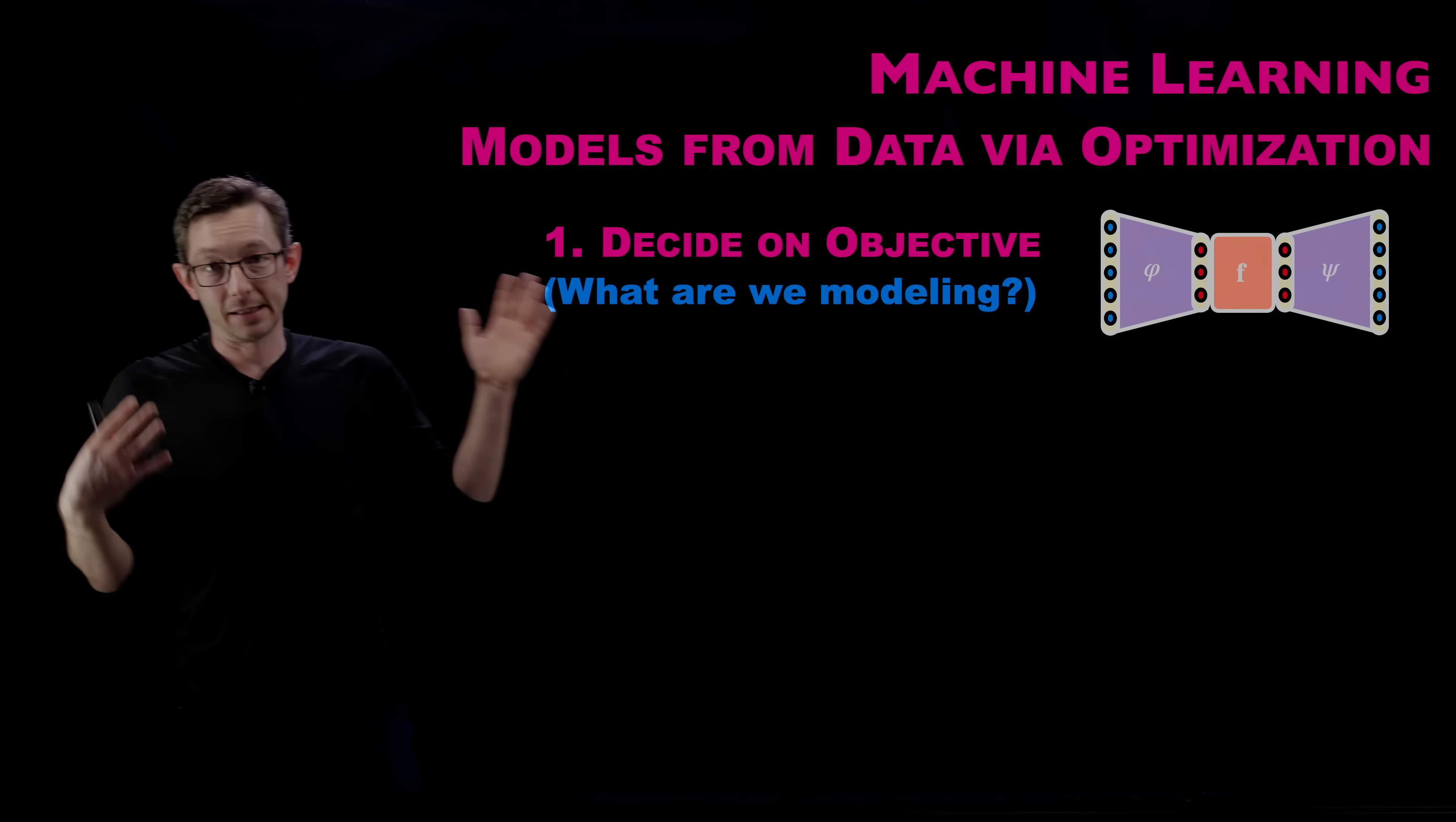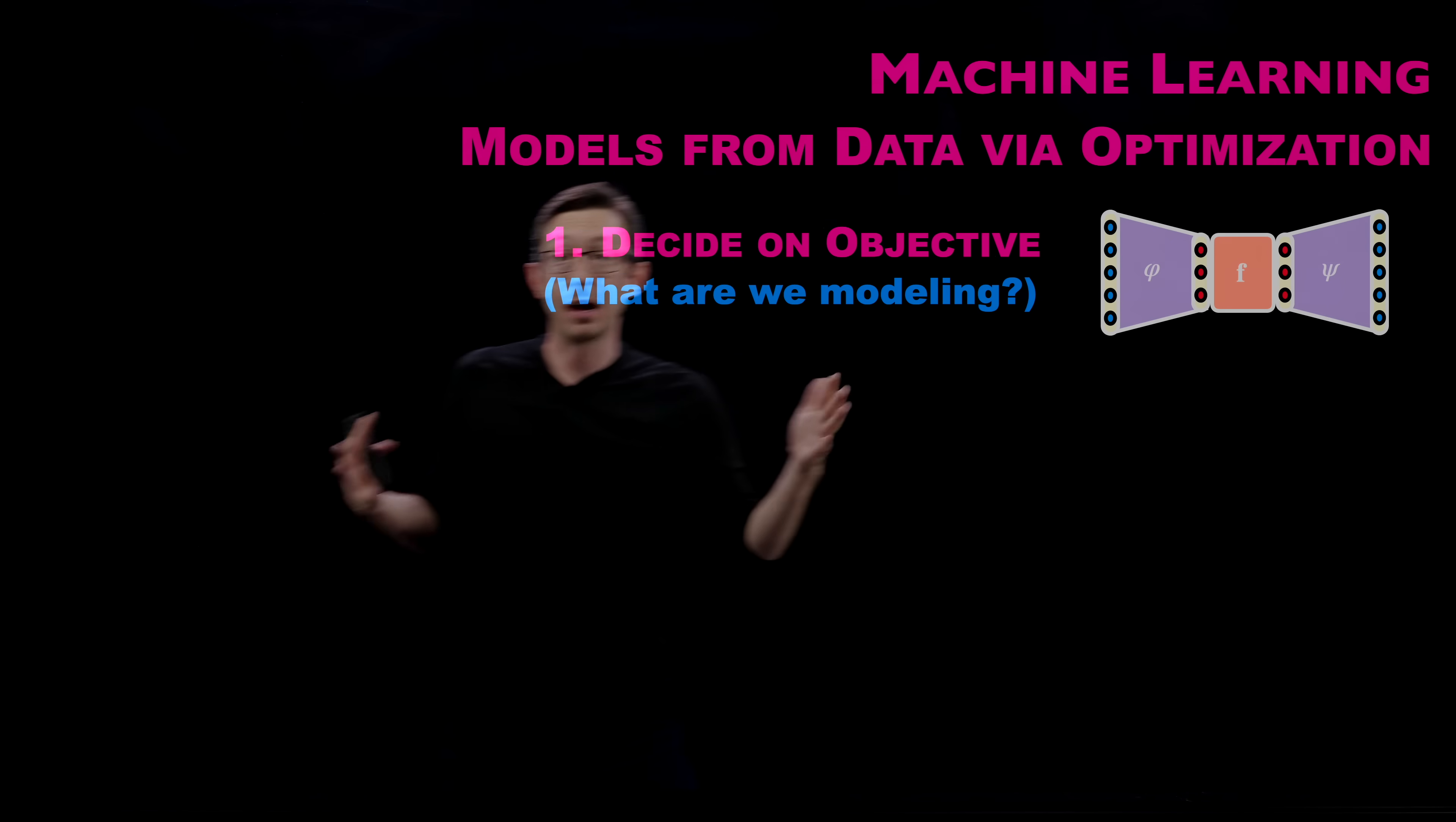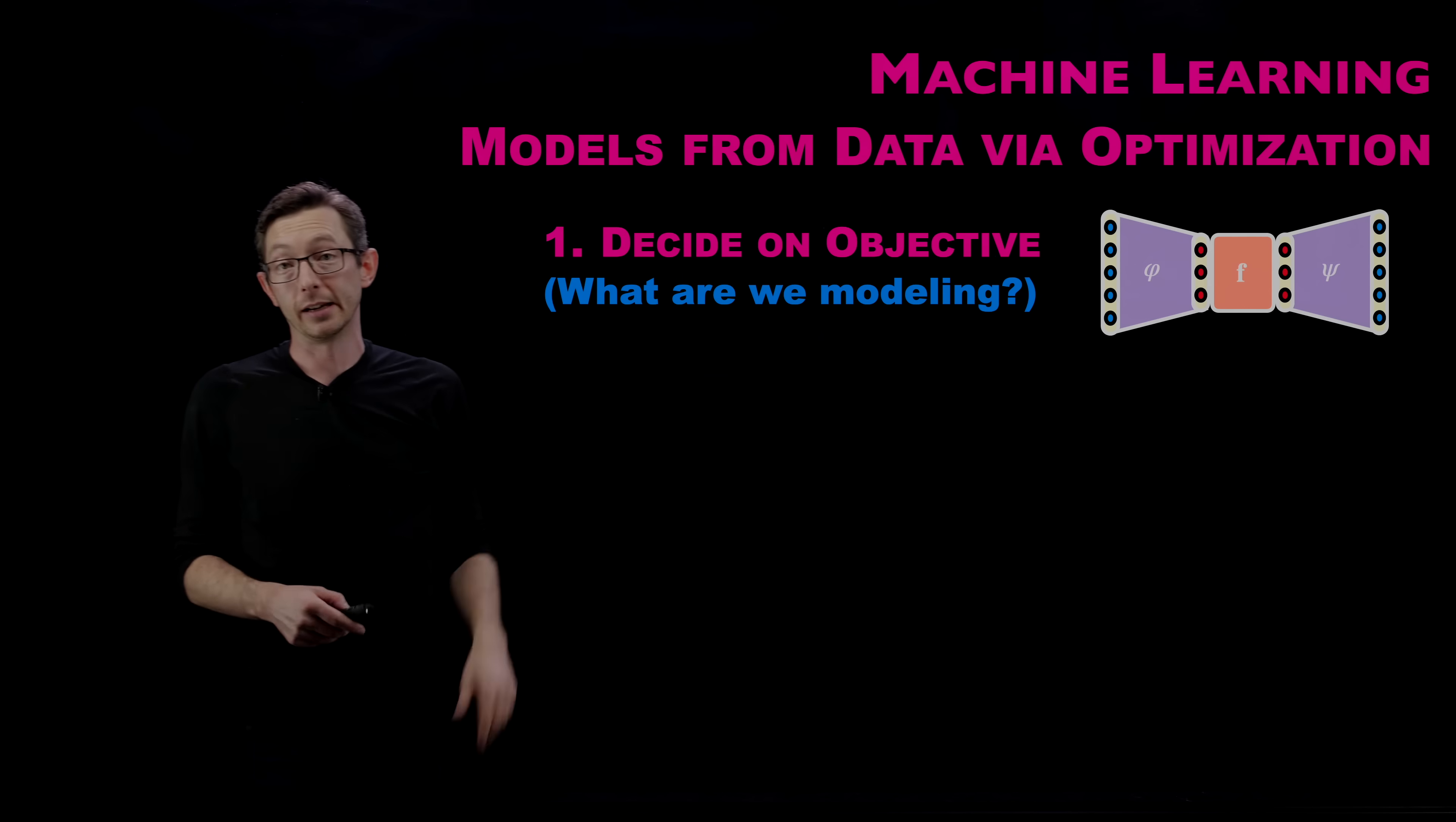By far the first step, remember, go back to that Picasso quote, the first thing you have to do is you have to decide on the question you're asking. You have to decide on the objective: what are we actually modeling? What are the inputs and the outputs of my machine learning model? Given what data, what decision do I want the model to make based on that data? That's a human thing to decide. This is where human expertise goes into deciding this objective.